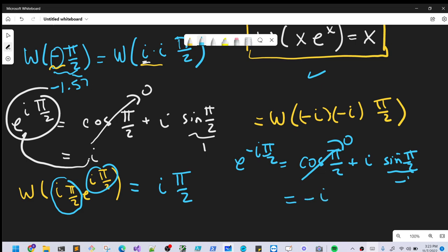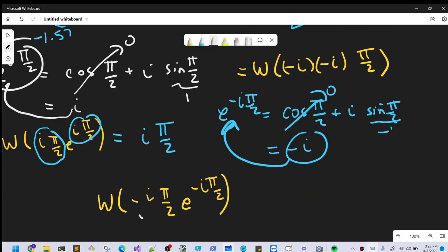So we're doing really the exact same thing. We can take this and write it like this. But doing that, we're in the right form to use the Lambert W function again. And this is just going to return minus i pi over 2.